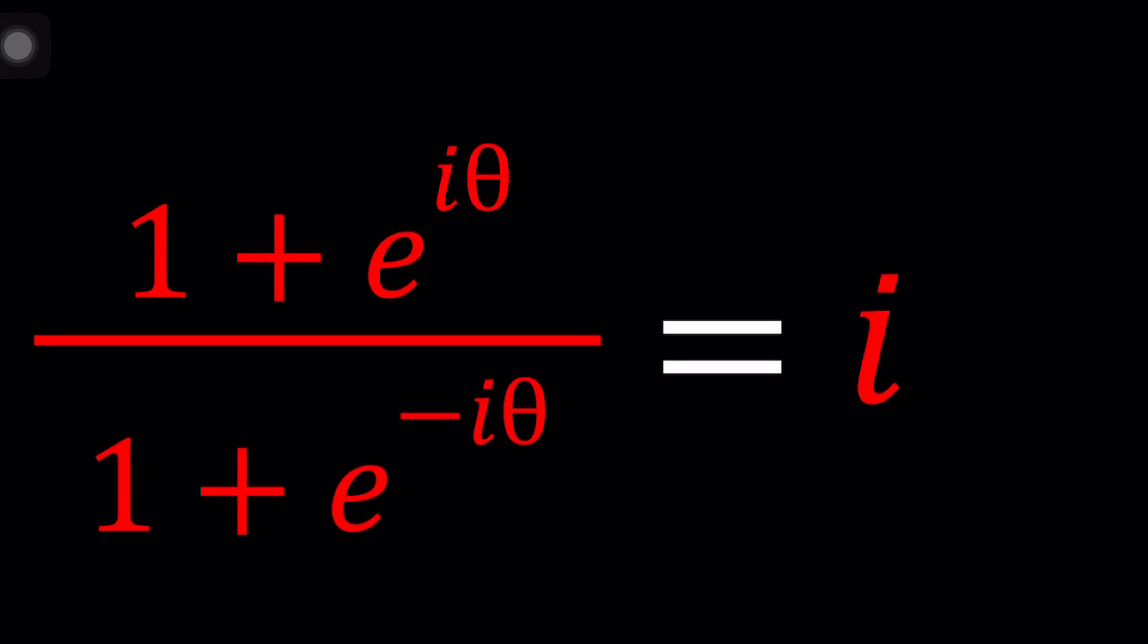Hello everyone, welcome to A plus B I. This channel is all about complex numbers and in this video we're going to be solving a rational equation with complex numbers. We have 1 plus e to the power iθ divided by 1 plus e to the power negative iθ equals i. A lot of i's, a lot of imaginary numbers, and we're going to be solving for theta because that's the only unknown.